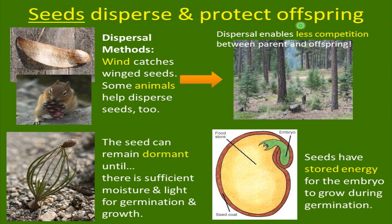How do seeds get around once they've been fertilized? They're going to be dispersed by wind, so they can have little wings on them — winged seeds. A lot of animals help too. There are certain birds called crossbills — large finches with crossed bills designed specifically for removing cone seeds from gymnosperm cones. Our little chipmunk or ground squirrel is also able to do the same thing. Dispersal enables less competition between parent and offspring, so the seeds can get to a nice open spot and not compete with their own parent.